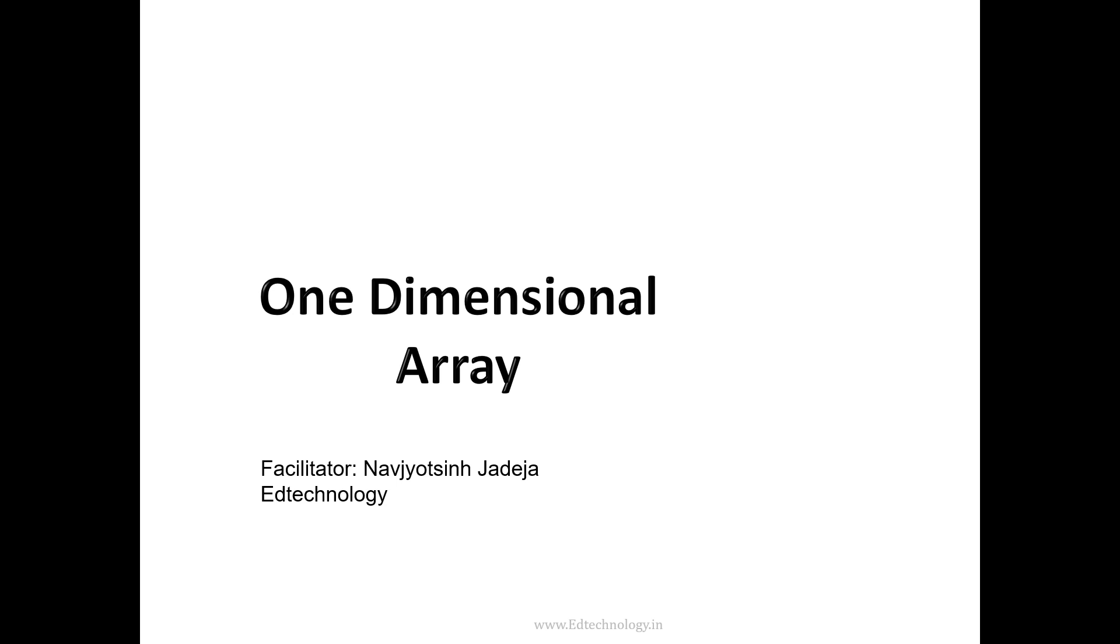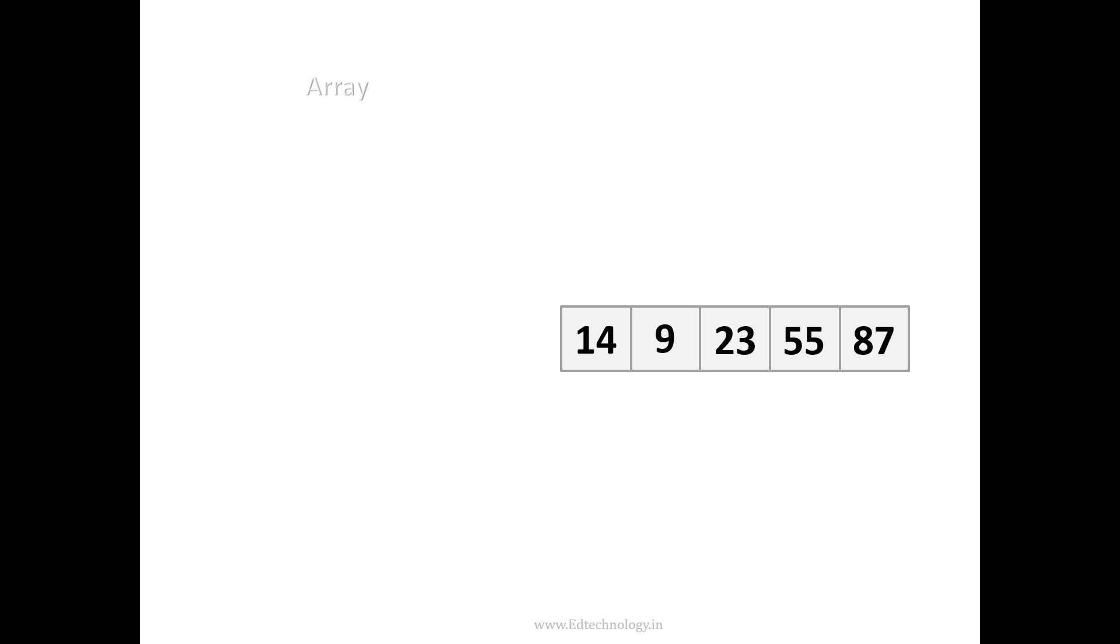This is how arrays are declared - the values are stored in the same name of a variable with multiple values stored at the same time of the same type. And it's one-dimensional because it's the horizontal storage which we are seeing right now.